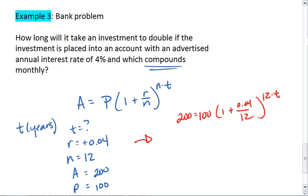First step is to condense everything that I have inside those parentheses. 0.04 divided by 12 ends up being 0.00333 repeating, plus 1 gives me 1.00333 repeating to the 12T.